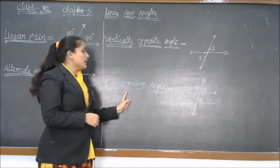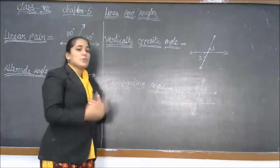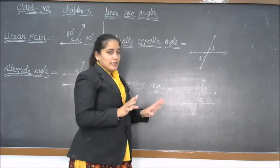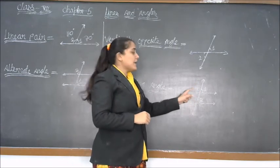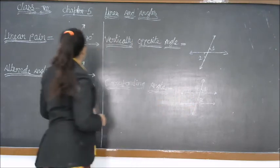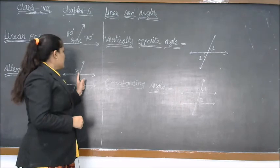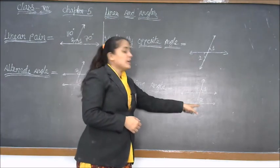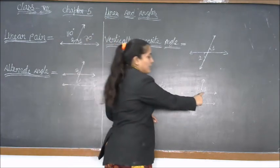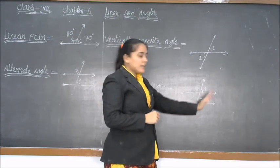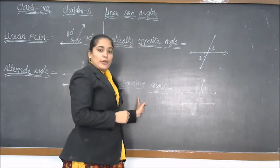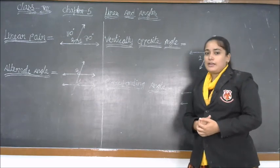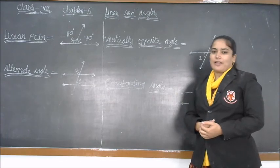The fourth type is corresponding angle. In corresponding angle, we have the same two parallel lines and one transversal. Unlike alternate angles where the two angles are in opposite directions, in corresponding angles the two angles are in the same direction. Angle 1 and angle 2 have the same direction and are known as corresponding angles. In this chapter we discussed many types of lines and angles. I hope you all have understood. Thank you and have a nice day.